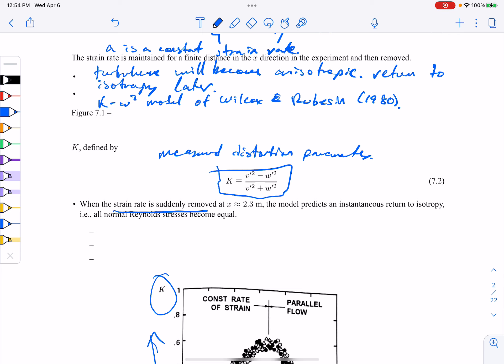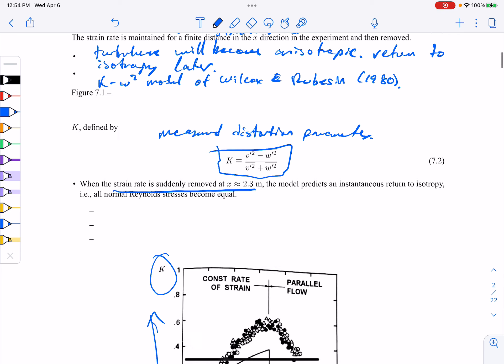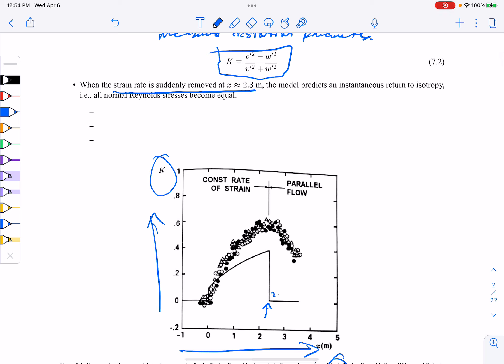So you can see there's a sudden strain rate change at about x of 2.3 meters. That's this location here. And the model predicts an instantaneous return to isotropy. And why? Because all the Reynolds stresses are becoming equal when you have isotropy.